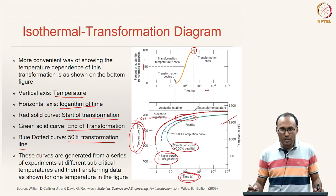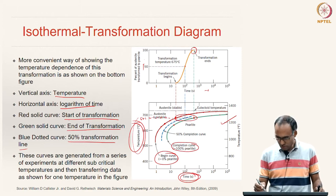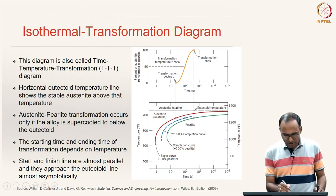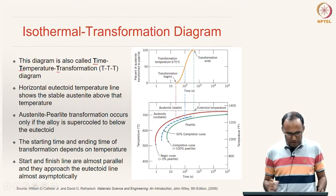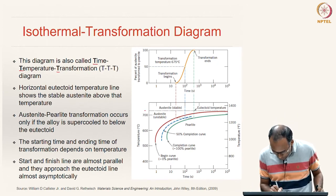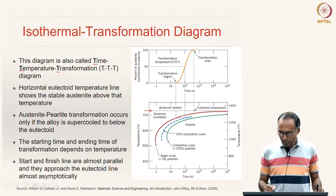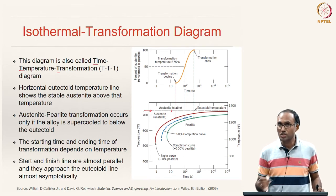In the TTT diagram, the vertical axis is temperature and the horizontal axis is logarithm of time. The red curve represents the start of transformation, the green curve the end of transformation, and the blue dotted curve the 50% transformation line. These are generated from a series of experiments at different subcritical temperatures, with data transferred as described. Above the critical eutectoid temperature, austenite is stable; below it, austenite is not stable.